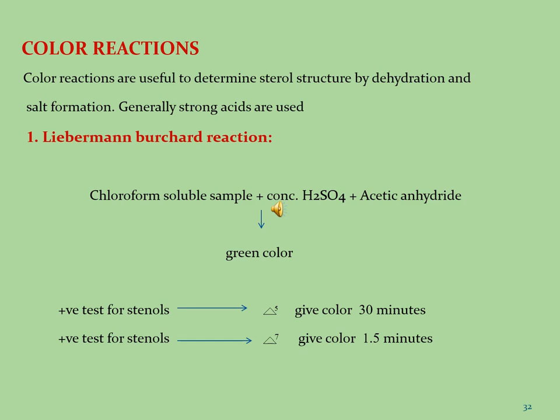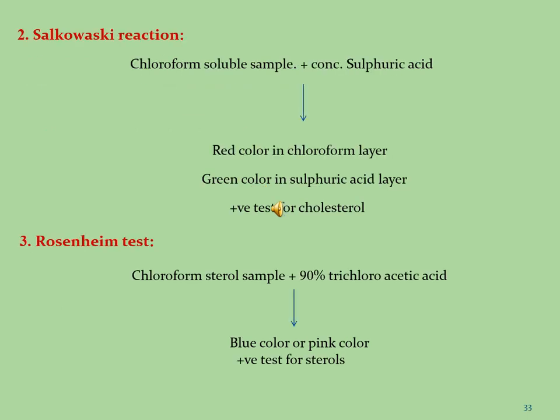The first reaction is the Liebermann-Burchard reaction. In this reaction, the sample is taken in chloroform and a few drops of concentrated sulfuric acid are added along the side walls of the test tube, followed by acetic anhydride, and we observe green color. If the color is observed after 30 minutes, it is a positive test for sterols and indicates the double bond is present at carbon-5 position. If the color appears after 1.5 minutes, it is a positive test for sterols and the double bond is at carbon-7 position. The second test is the Salkowski reaction: sample is taken in chloroform and a few drops of concentrated sulfuric acid are added. If we observe red color in the chloroform layer and green color in the sulfuric acid layer, this is a positive test for cholesterol.